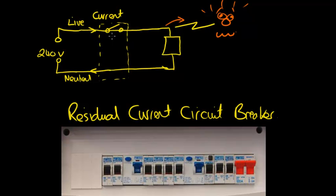What the residual current circuit breaker will detect is that there is more current flowing along the live wire than is coming back along the neutral and it will then cut off the supply. This happens very quickly.